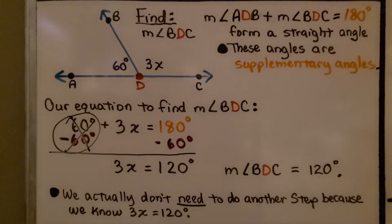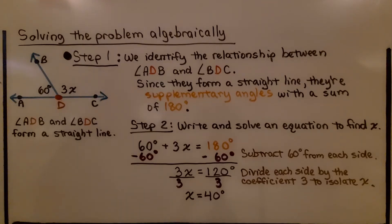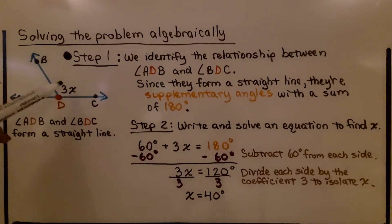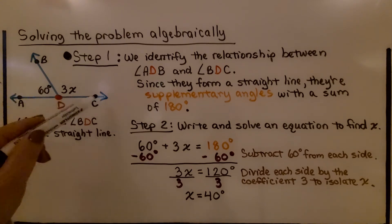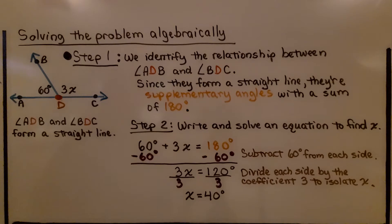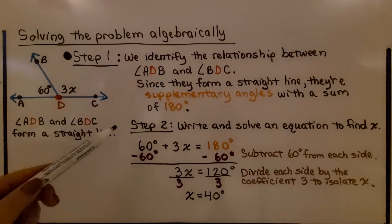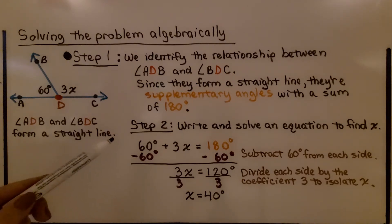We actually don't need to do another step because we know 3x is equal to 120 degrees. Now let's try solving the problem algebraically using the same diagram. We know that angle ADB and angle BDC form a straight line. We identify the relationship: since they form a straight line, they're supplementary angles with a sum of 180 degrees. The second step is to write and solve an equation to find x.